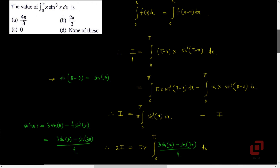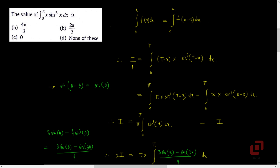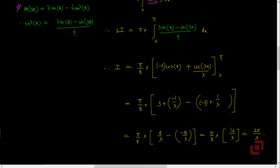So our answer is 2pi by 3, which is option B. To conclude: first, we used the property integral from 0 to a of f(x) dx equals integral from 0 to a of f(a minus x) dx. Second, we used the allied angle property sin(pi minus x) equals sin(x) to simplify sin cube(pi minus x). Third, to evaluate the integral of sin cube(x), we used the triple angle formula for sin(3 theta). Simplifying gave us the answer 2pi by 3.